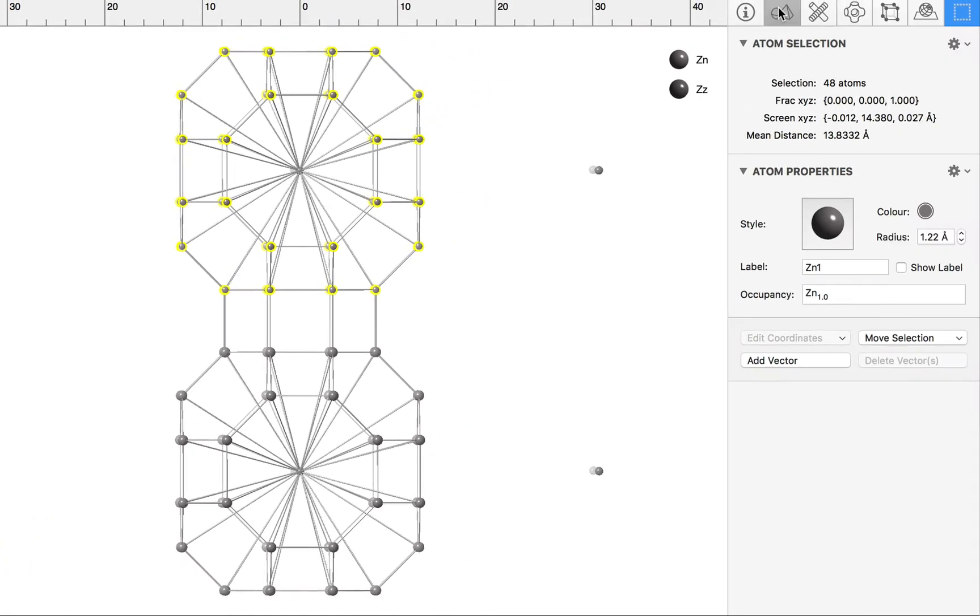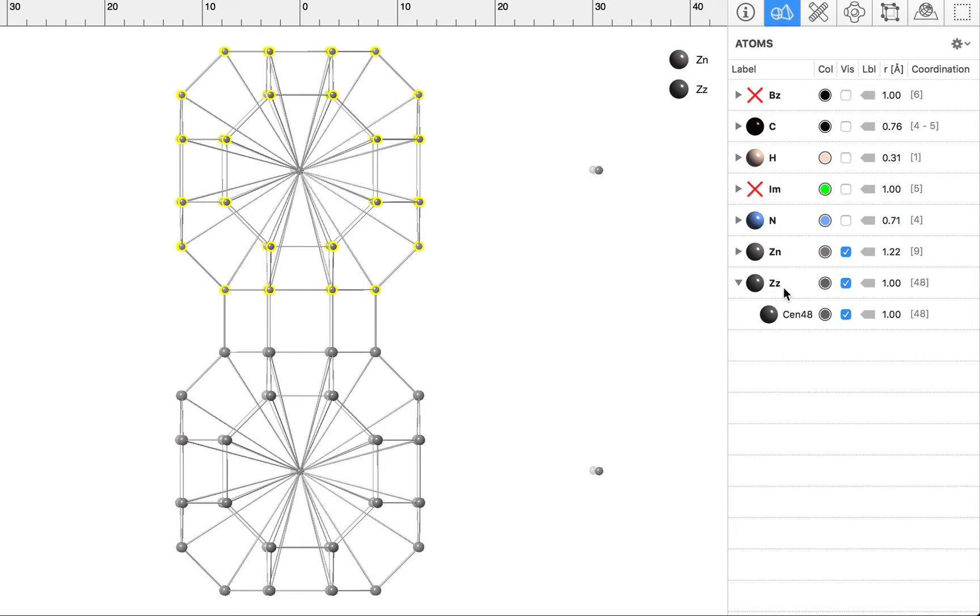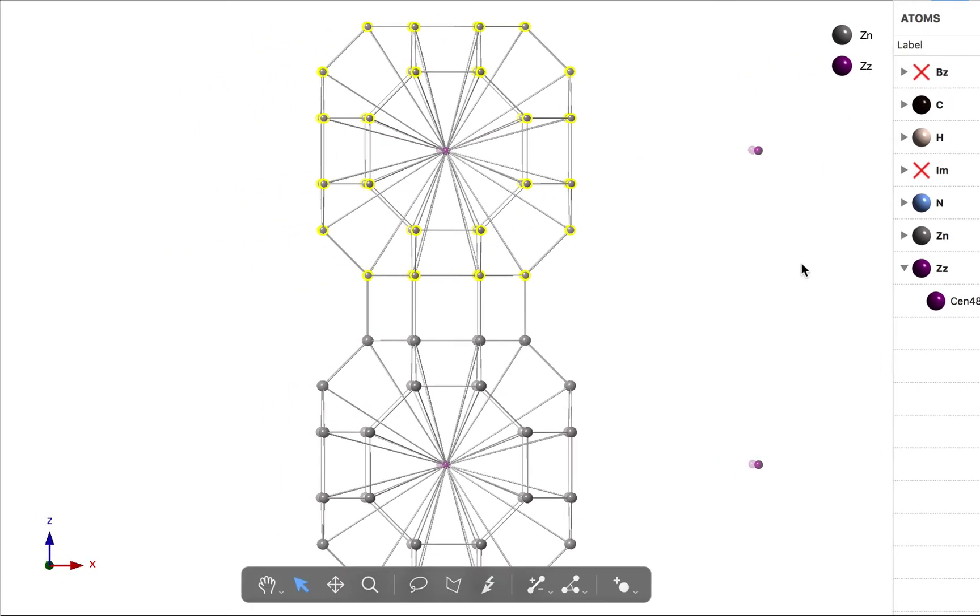And we have our dummy atom in the middle. I can go to the atoms inspector, and here's our ZZ element. And this is our site, CEN48. Let's just change the color of that. Let's make that a slightly tasteful shade of magenta, and we can see that there. Now let's have a look at the connector.